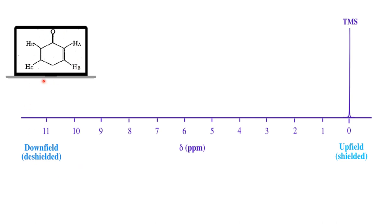Here there are four protons given, and we have to understand which of them are shielded and which are deshielded. So what are the factors that cause shielding and deshielding? The first and foremost is the electronegativity factor, and the next one is called magnetic anisotropy. In this video, I am going to discuss about magnetic anisotropy.